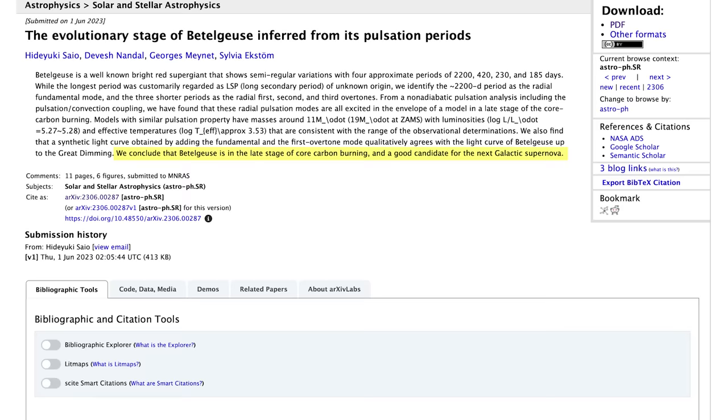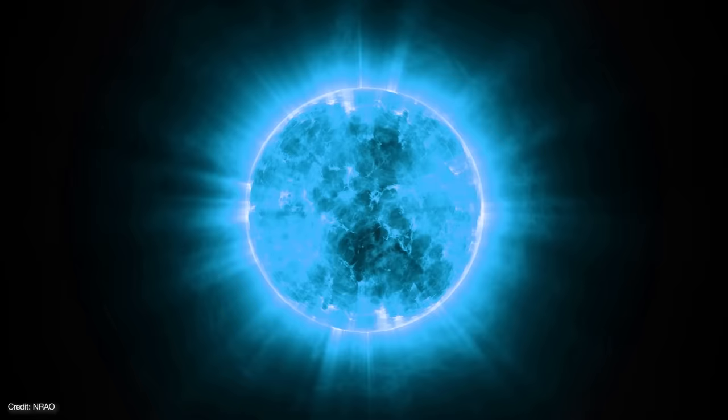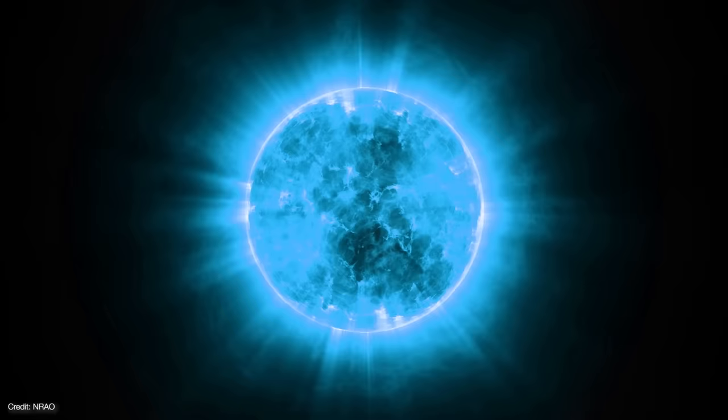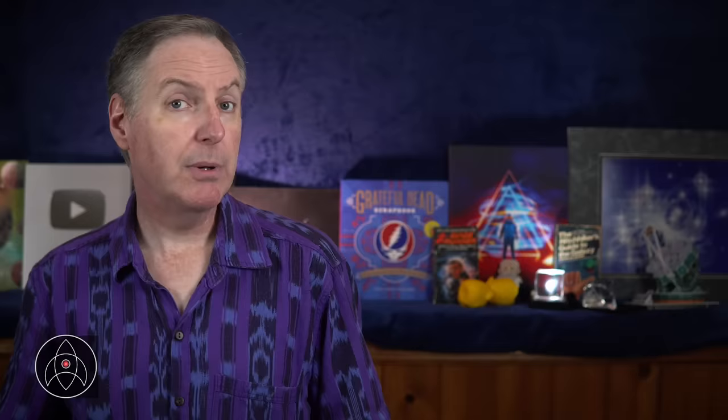They determined that Betelgeuse may be reaching the end of carbon burning in its core. That's remarkable, considering that most astronomers think Betelgeuse is still undergoing helium fusion in its core and therefore shouldn't supernova for at least another hundred thousand years or so.